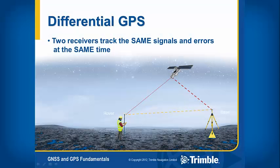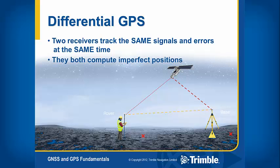Differential GPS is a precise measurement of the relative positions of two receivers tracking the same GPS signals at the same time. The base station is over a known coordinate, as depicted by the yellow triangle in the picture. The base station GPS receiver compares the calculated GPS position to the true location, and then calculates the difference for each GPS satellite it tracks. This information can then be used by other rover receivers to correct for the GPS errors in their measurements.